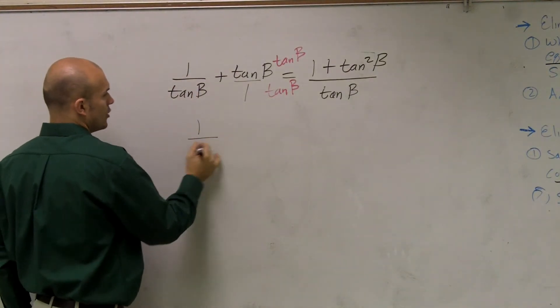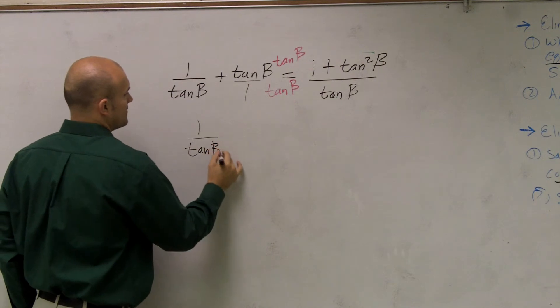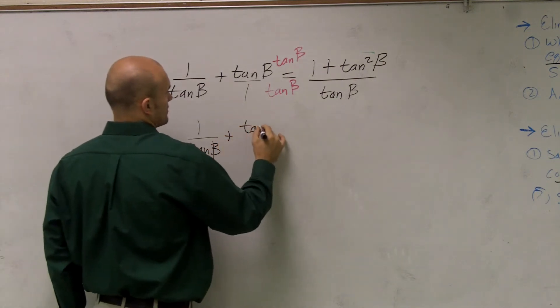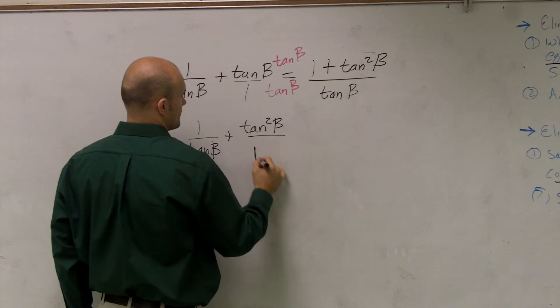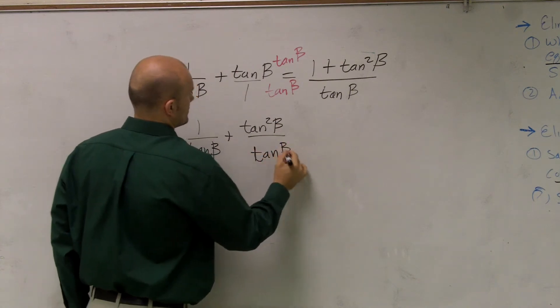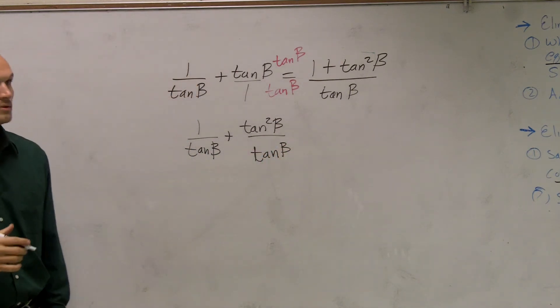All right, so I have 1 over tangent of beta, plus tangent squared of beta, over tangent of beta. You guys see that?